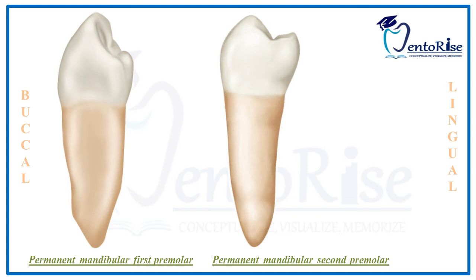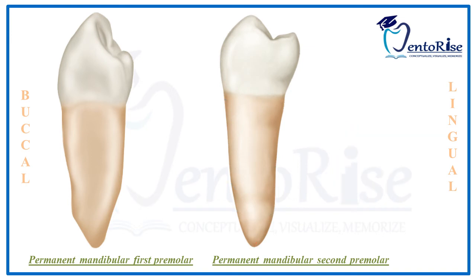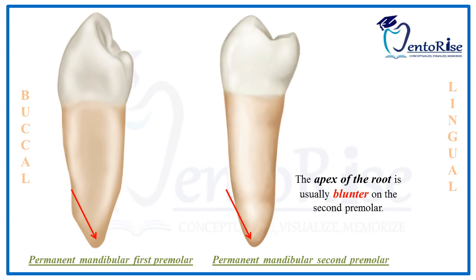To summarize the mesial aspect crown features: we discussed dimensions, the buccal cusp position and length, the lingual cusp, the amount of occlusal surface seen, the mesial marginal ridge, and the presence or absence of the mesiolingual developmental groove. Coming to the root from the mesial aspect, the root is longer and in most cases slightly convex on the mesial surface, though the convexity is not always present. The apex of the root is usually blunter on the second premolar than on the first premolar.